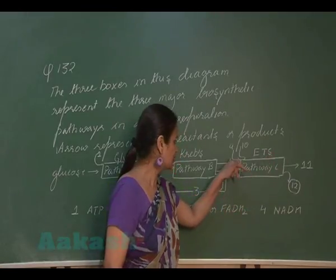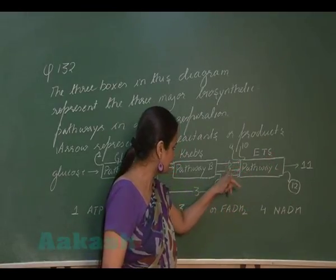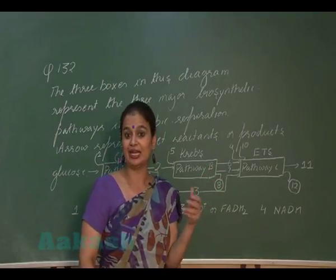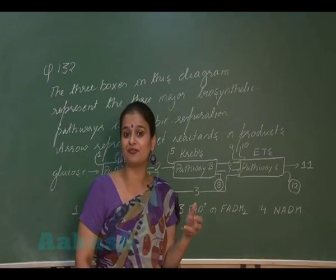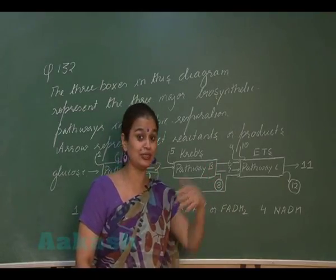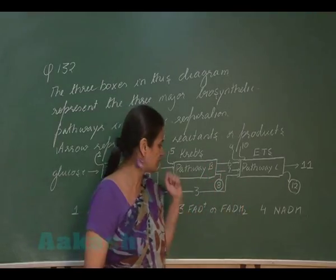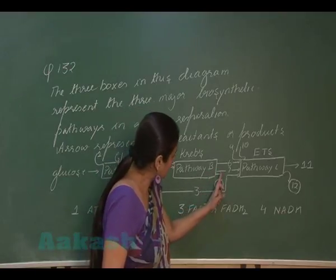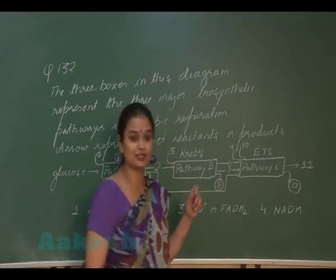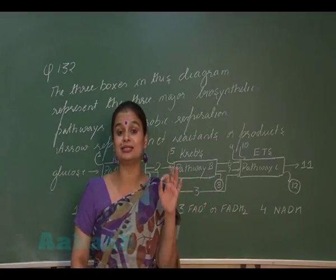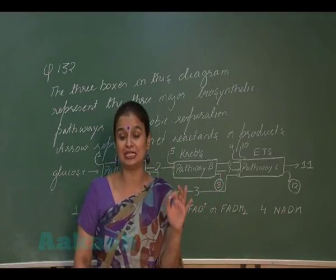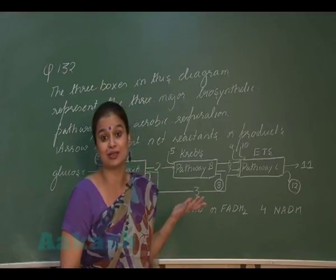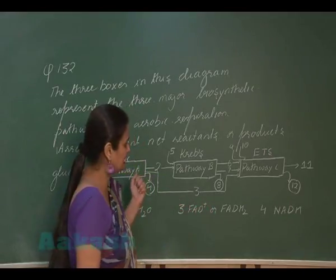Positions 6 and 7 represent NADH or FADH entering the electron transport system. The 8th product formed here is again ATP, formed through substrate level phosphorylation.